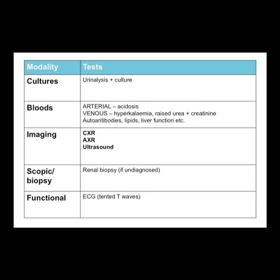Going through the investigations: urinalysis and culture — why? Protein (nephrotic syndrome), hematuria (nephritic syndrome), and infection. For arterial blood gas — acidosis, because remember the four cardinal features include acidosis. For venous bloods, the critical one is potassium — hyperkalemia is what will kill the patient. You do a urea and electrolyte panel: hyperkalemia first, then urea and creatinine — if elevated, they're not removing them properly because the kidneys aren't working.